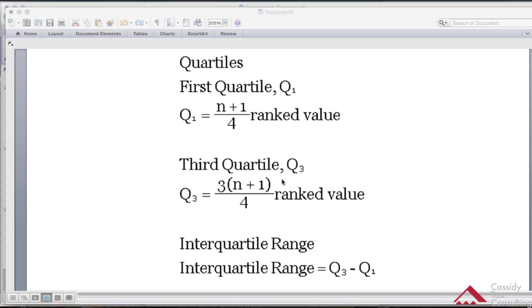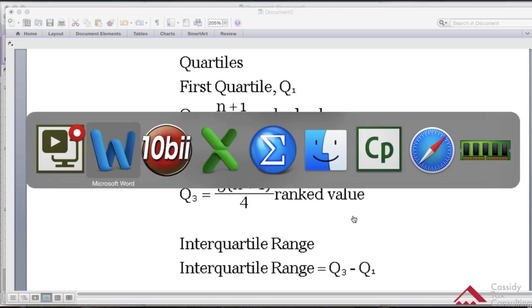To get the interquartile range, the interquartile range equals Q3 minus Q1. So let's get started. I'm going to show you how to do it on your calculator.